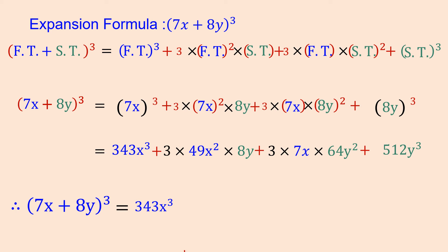Therefore, 7x plus 8y whole cube equals 343x cube plus 1176x square y plus 1344xy square plus 512y cube. I hope you have understood. If you have understood, please share with your friends.